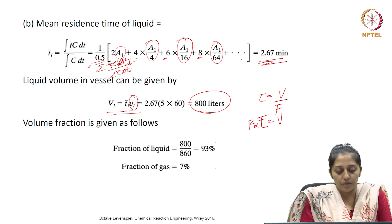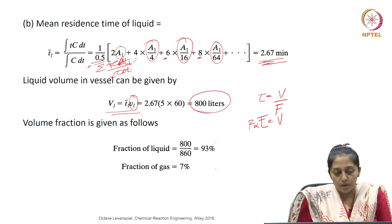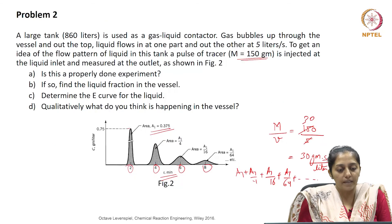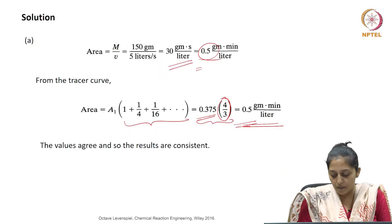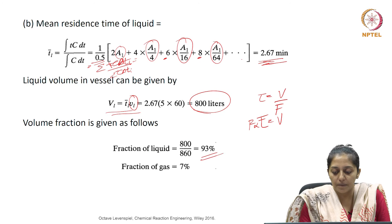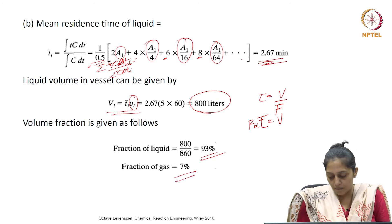Now we need to calculate the volume fraction. The total reactor is of the volume 860 liters. So volume fraction in the vessel would be 93 percent. The remaining would be gas fraction which comes out to be 7 percent.